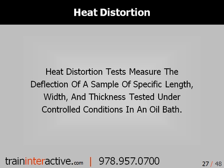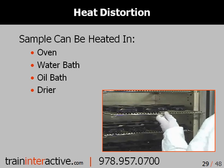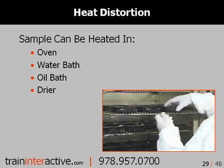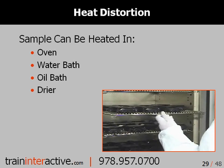Heat distortion tests measure the deflection of a sample of specific length, width, and thickness tested under controlled conditions in an oil bath. Although the controlled conditions of a standard heat distortion test may not be relevant to your application, the physical performance of your part under heat conditions can be very important data. Even though your part may never find itself in an oil bath, it might be subjected to heat. In such cases, an oven can be very helpful. If your part can be found in dry, arid conditions, using the dry air from a desiccant dryer system can be a great way to heat the part up for such a test.